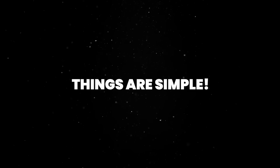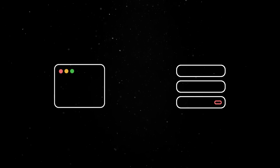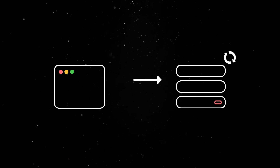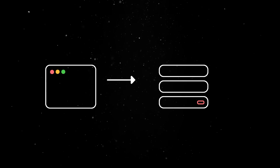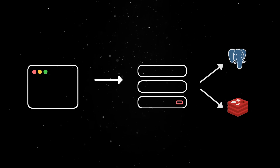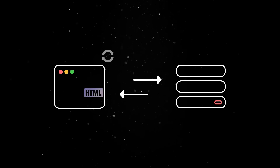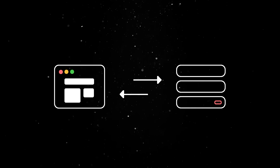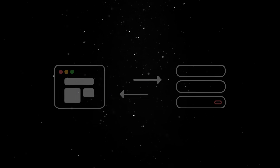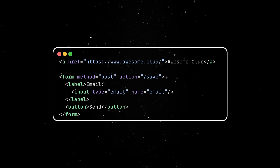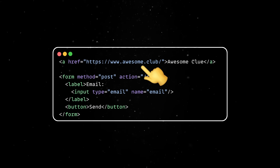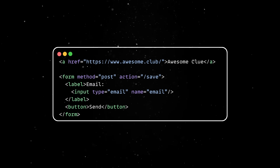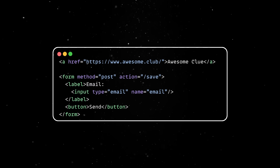Things are actually really simple. All you need is a web server listening for incoming HTTP requests, perform your business logic, maybe store some data in a storage solution, render an HTML response and send it back to the browser. The browser will then parse and display that HTML. The HTML standard allows users to interact with the webpage via links and forms. Whenever a link is clicked or a form is submitted, another HTTP request is sent to the server and we go through the same process again.